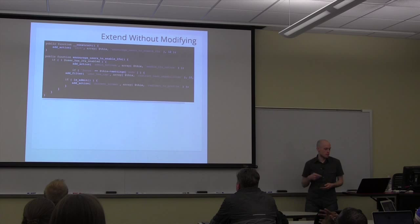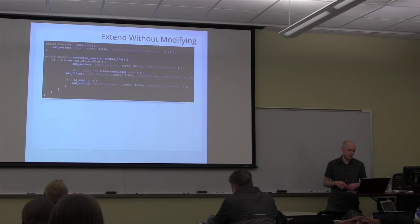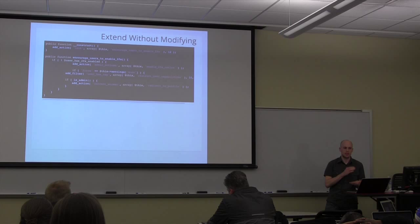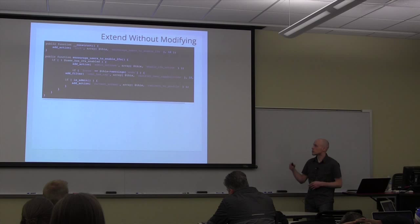This is the core of what it does. It hooks into the init hook, checks if they have it enabled, and if they don't, adds the admin notice. In force mode, it puts them back to subscriber capability and redirects them to the profile. It's really simple — just a separate plugin that doesn't actually touch the Google Authenticator plugin, so upgrades aren't broken.